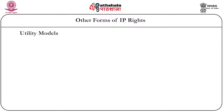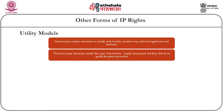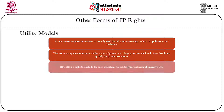Finally, utility models are another regime prevalent in many jurisdictions but India does not provide for utility model protection. The patent system requires invention to comply with novelty, inventive step, industrial application, and disclosure. This leaves many inventions — largely incremental workshop improvements in nature made by small and medium entities and micro entities — outside the scope of patent protection, because the threshold, especially the inventive step standard, is quite high.